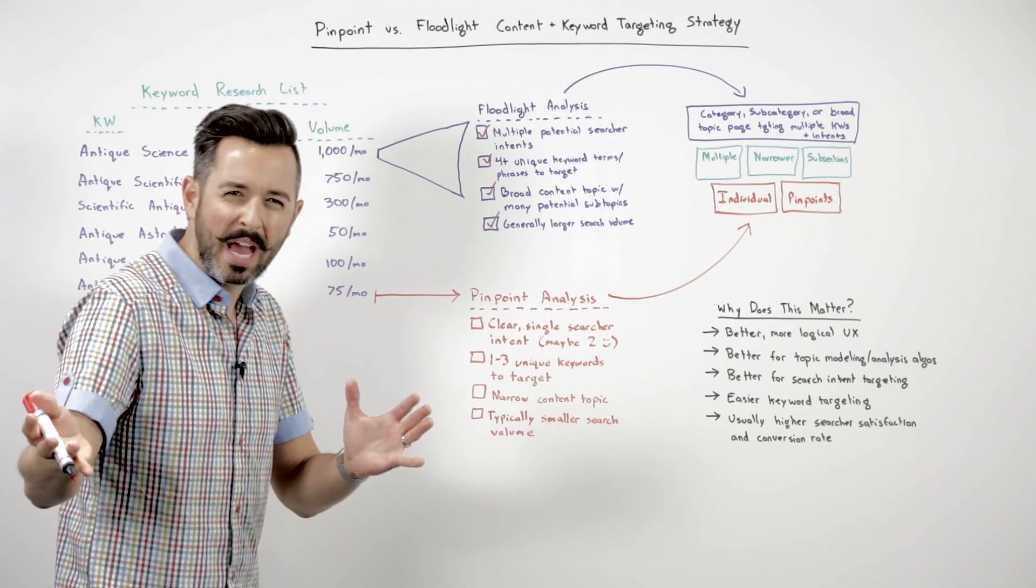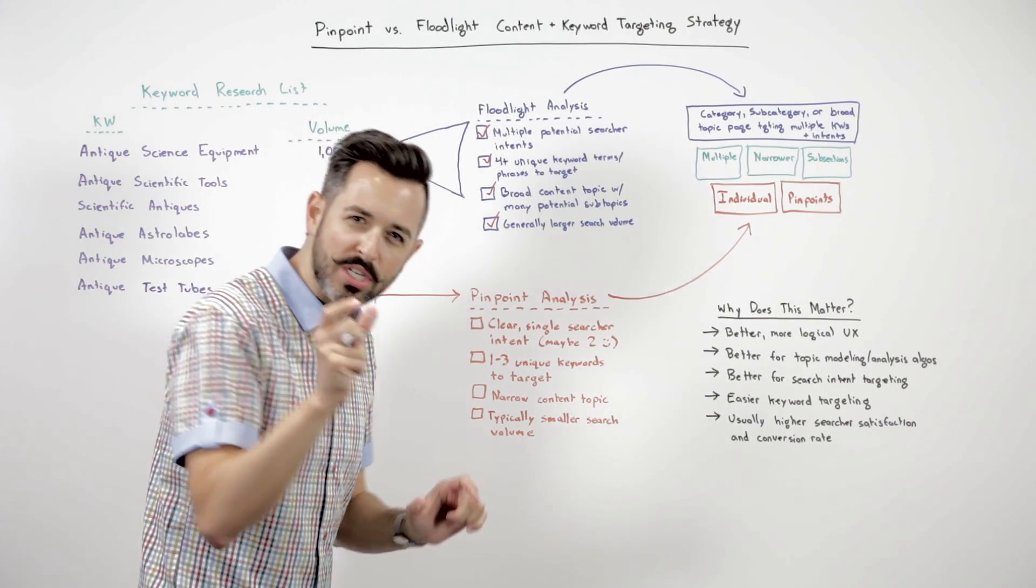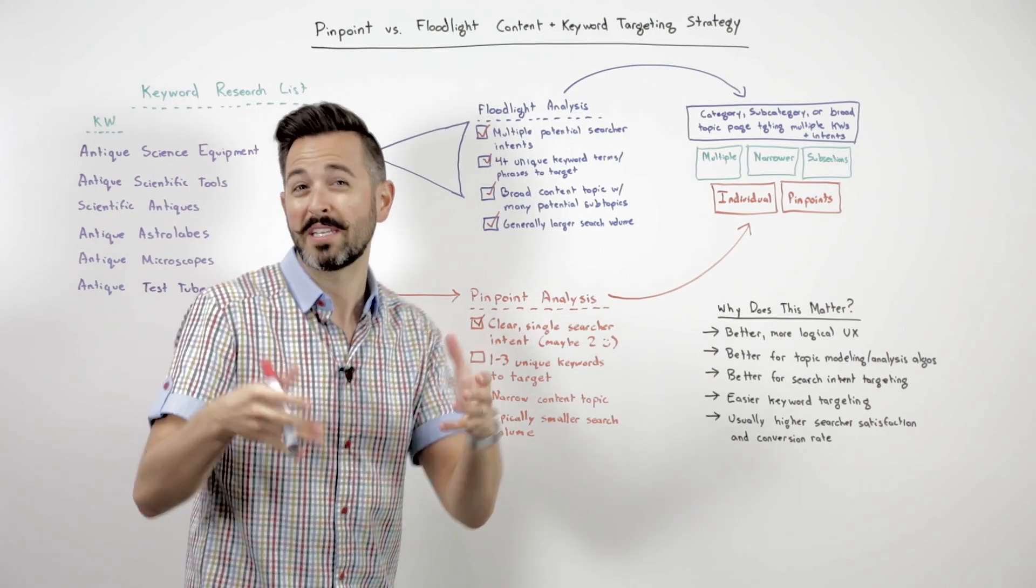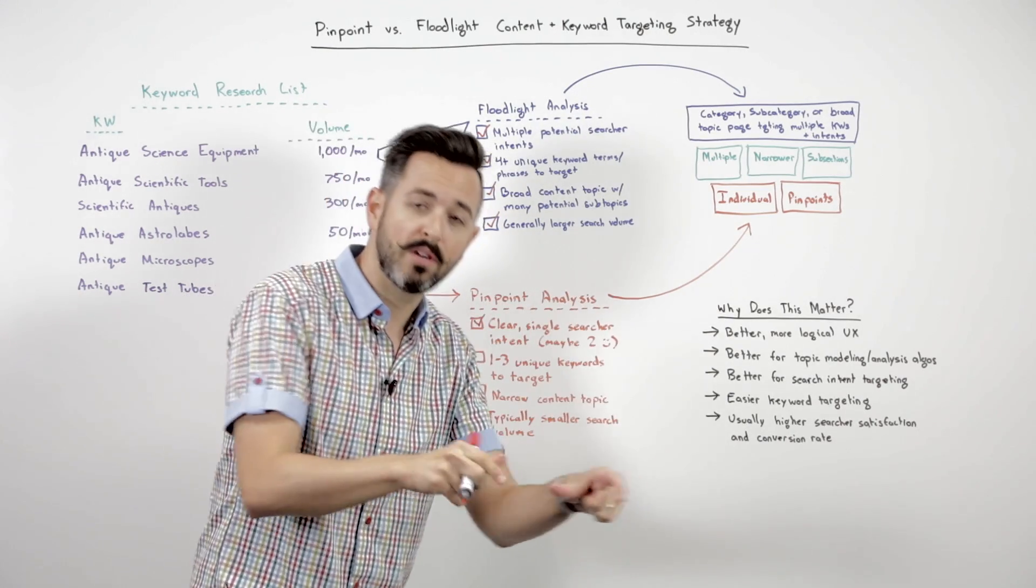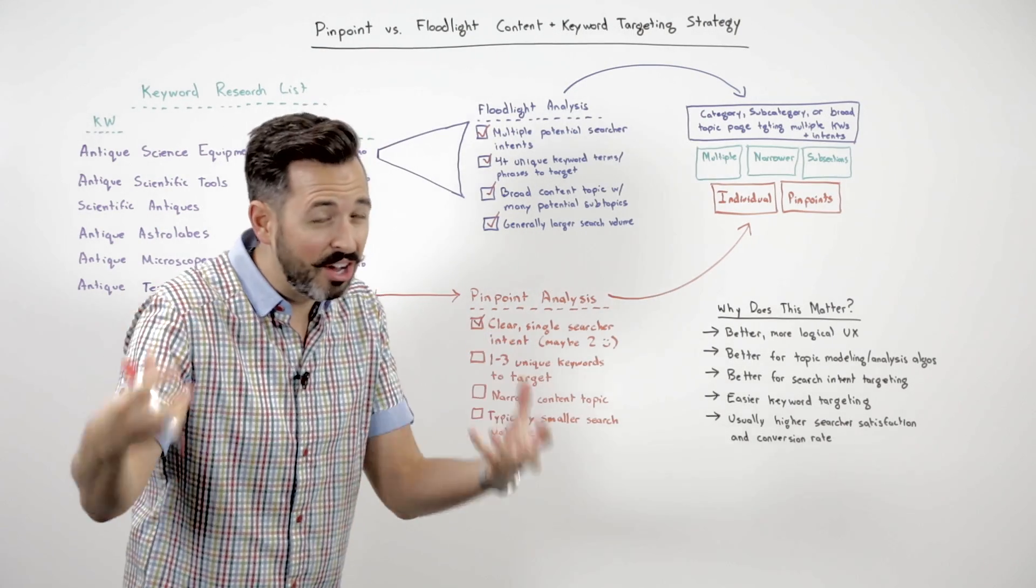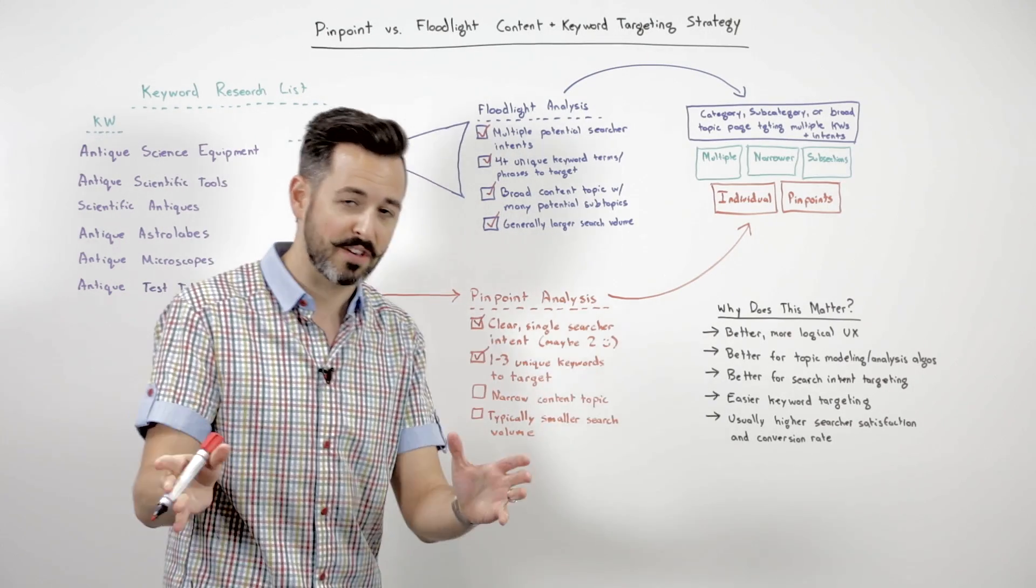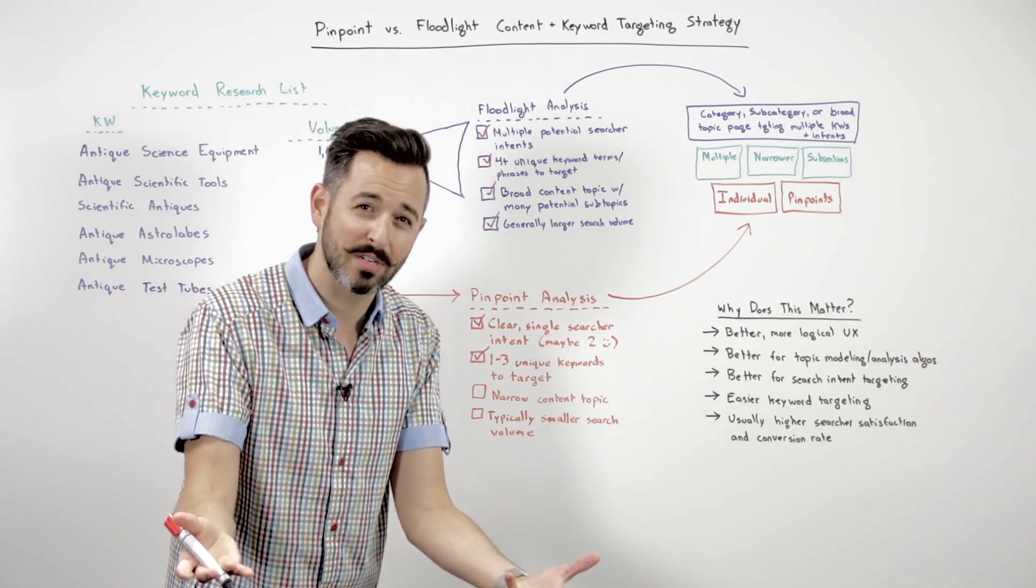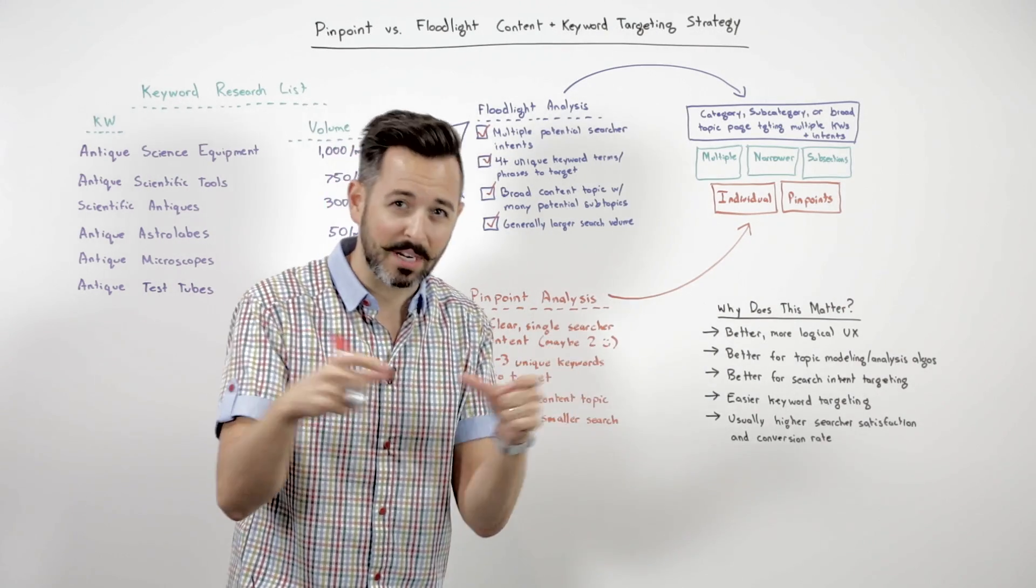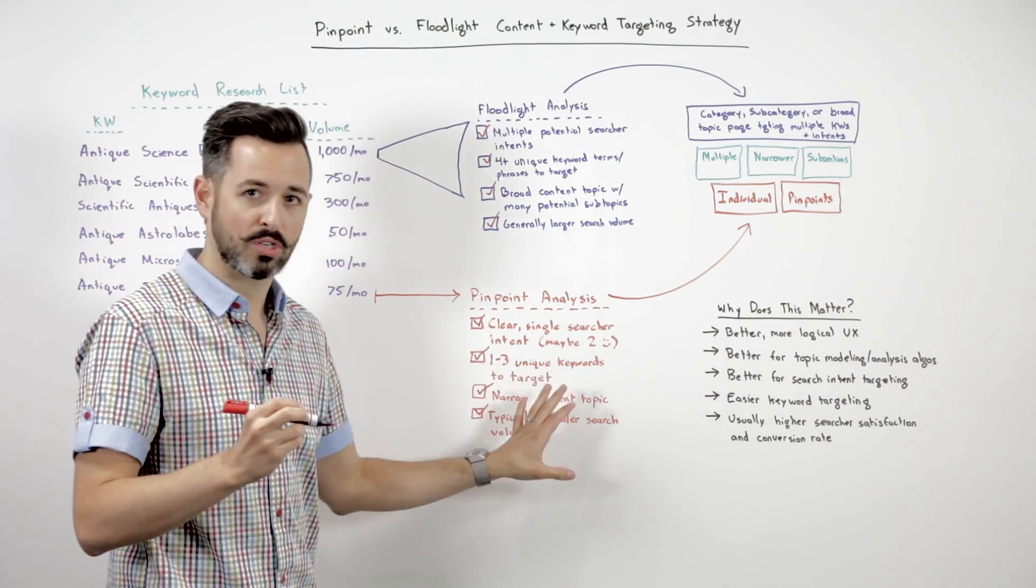For pinpoint analysis, we kind of go the opposite direction. We might look at a term like antique test tubes, which is a very specific kind of search, and that has a clear single searcher intent or maybe two. Someone might be looking for actually purchasing one of those, or they might be looking to research them. Not a ton of additional intents. One to three unique keywords? Yeah, probably. It's pretty specific. Antique test tubes, maybe 19th century test tubes, maybe old science test tubes, but you're talking about a limited set of keywords. It's a narrow content topic, typically smaller search volume.